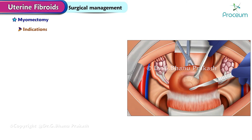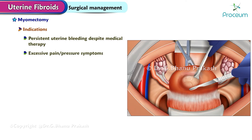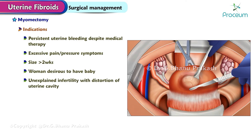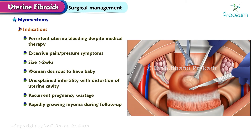Indications of myomectomy: persistent uterine bleeding despite medical therapy; excessive pain or pressure symptoms; size greater than 2 weeks; women desirous to have a baby; unexplained infertility with distortion of the uterine cavity; recurrent pregnancy wastage due to fibroid; rapidly growing myoma during follow-up; subserous pedunculated fibroid.